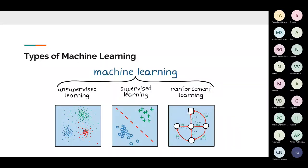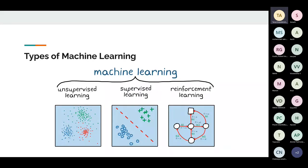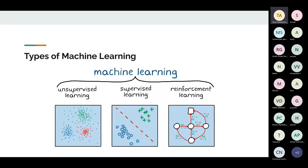In reinforcement learning, you have a well-defined problem and you define rewards and punishments. Take a self-driving car: if it's at an intersection and moves forward when another car is arriving, you penalize it — that's bad. You reward it for waiting until the car passes. You're teaching the model as it is learning, going back and forth with it.